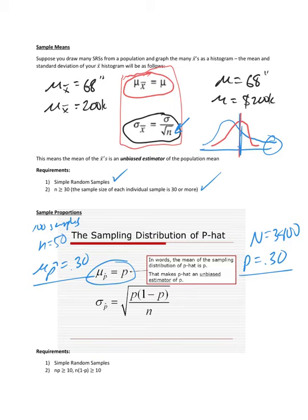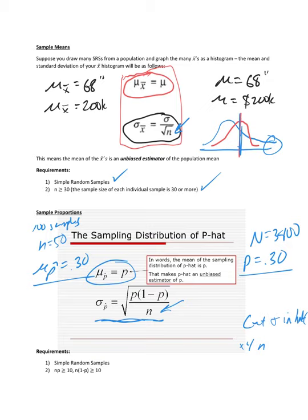Because root N is in the denominator under a radical, to cut your sigma in half, you'd need to quadruple your sample size. So if our standard deviation was 5% and we wanted to cut it to 2.5%, we'd have to quadruple our sample size. Margin of error we'll get into later when we bring in confidence intervals. Requirements for proportions: simple random samples, and N times P and N times (1 minus P) must be 10 or more.